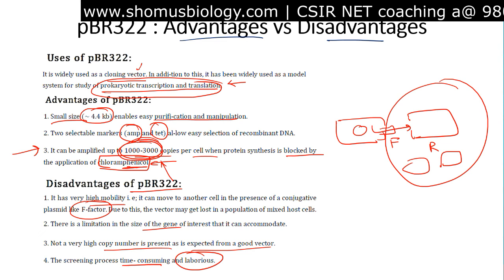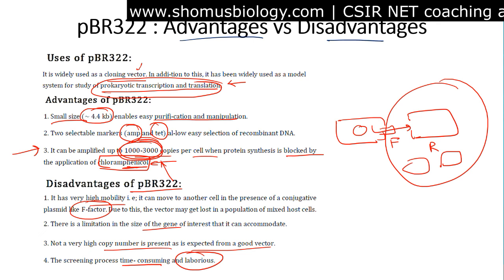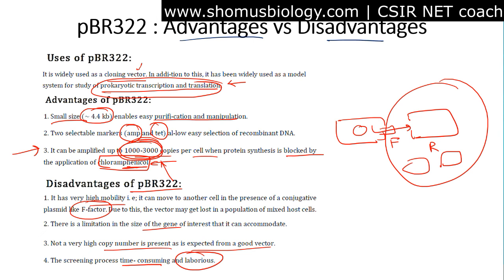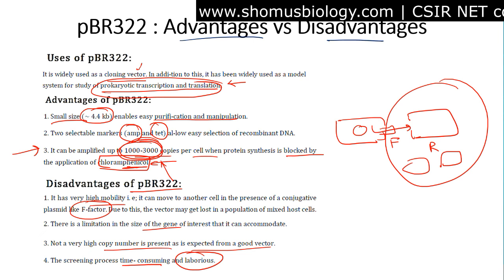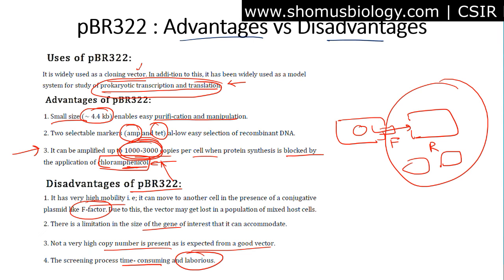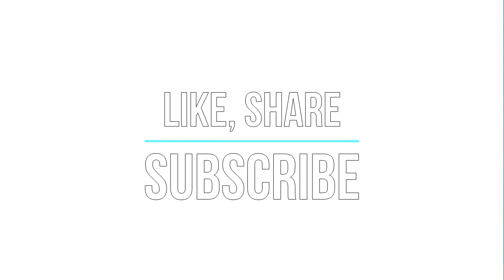Despite its disadvantages, PBR322 provides everything needed to insert a target DNA, clone it, and amplify it. It is a useful cloning vector and a good model for studying transcription and translation in prokaryotes. This video provides enough information to answer questions about PBR322 in competitive examinations such as CSIR NET, GATE, ICMR, and IIT JAM. Please like, share, and subscribe for more videos.